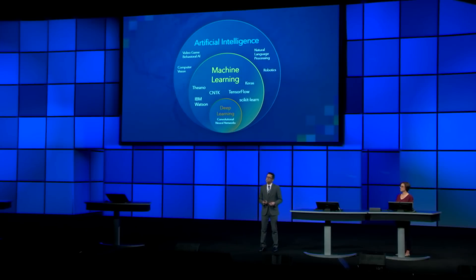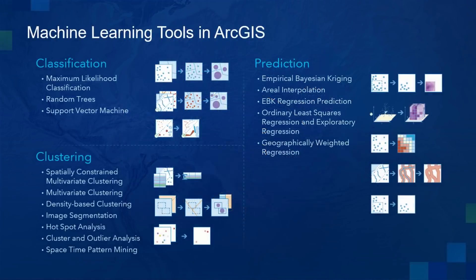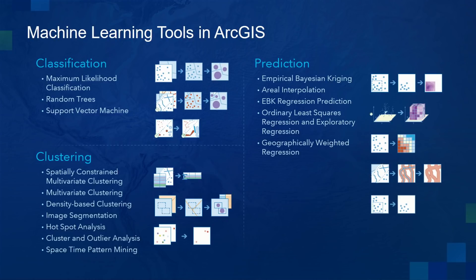There's a variety of use cases for these concepts. Some of these you may have heard about, like self-driving vehicles or recommendation engines. In ArcGIS, we apply machine learning to do spatial analysis. We have a history of applying machine learning algorithms into our geoprocessing tools to solve problems in three broad categories.